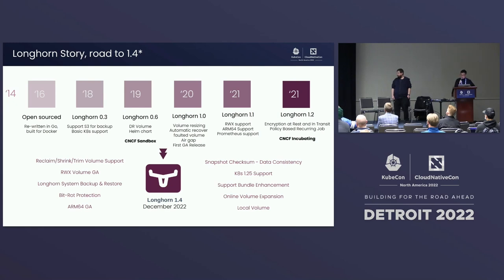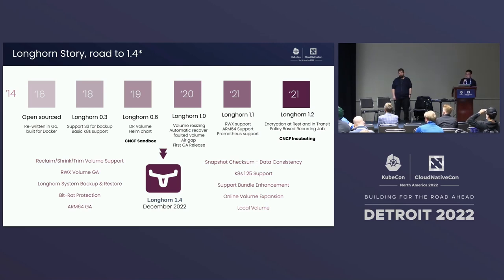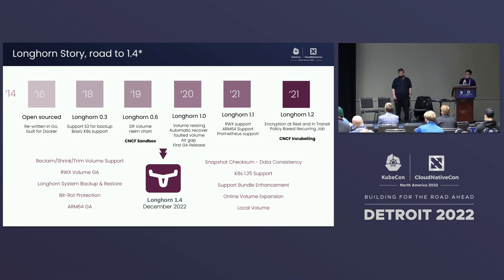1.4 is the upcoming release by end of this year and we focus on data integrity. The first item, trim volumes - since Longhorn is a block device, it could not previously respect the file system trim to free unused space, but we will support that in 1.4.0. For ReadWriteMany GA - previously we didn't have a meta service function for the share manager, which meant if a share manager restarted, data consistency could be at risk. Now we are introducing a meta service in our share manager to ensure client connections are maintained for data consistency.